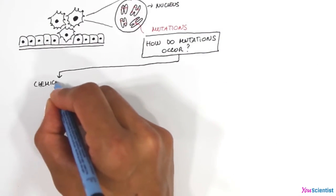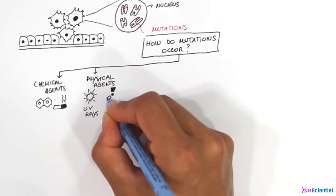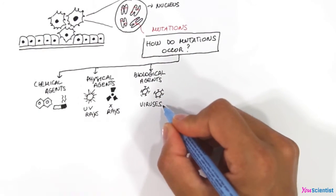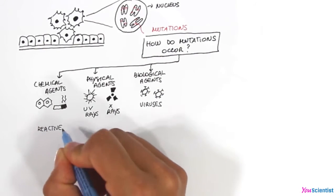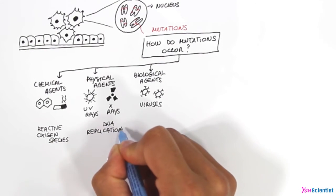Our DNA is continuously damaged by chemical agents such as smoke, or by physical agents such as UV rays and X-rays, or by biological agents like viruses. Our DNA can also be damaged by molecules generated by cell metabolism such as reactive oxygen species or during DNA replication.